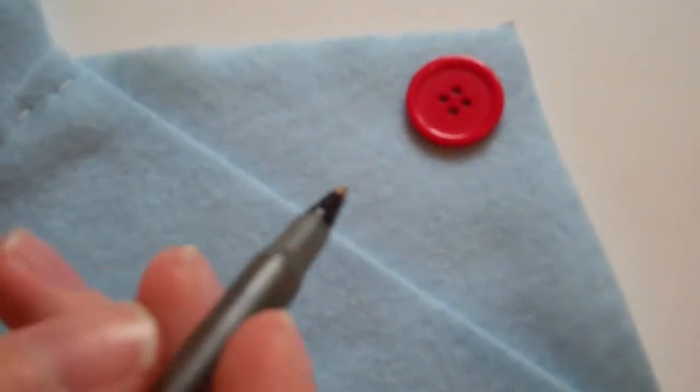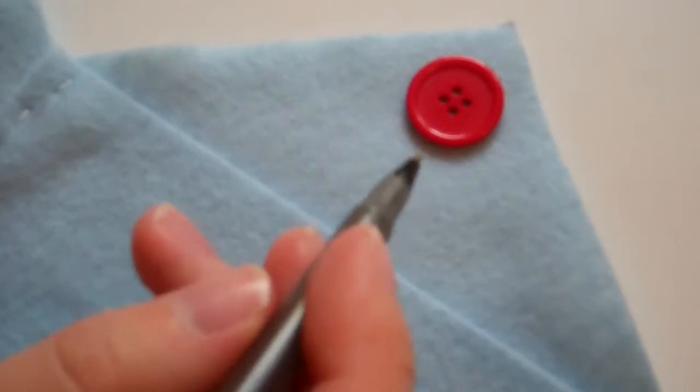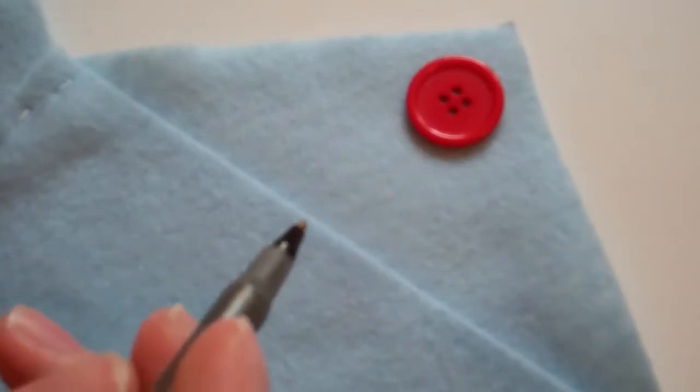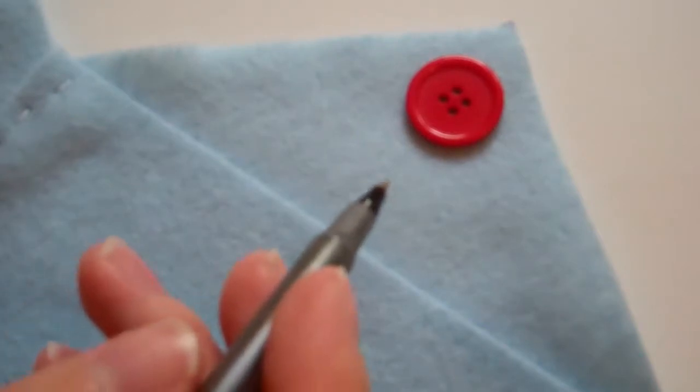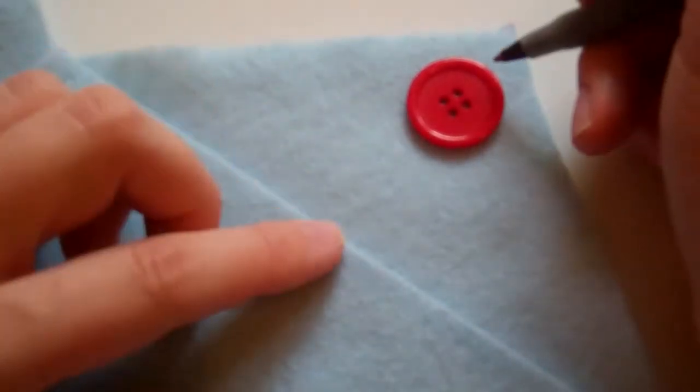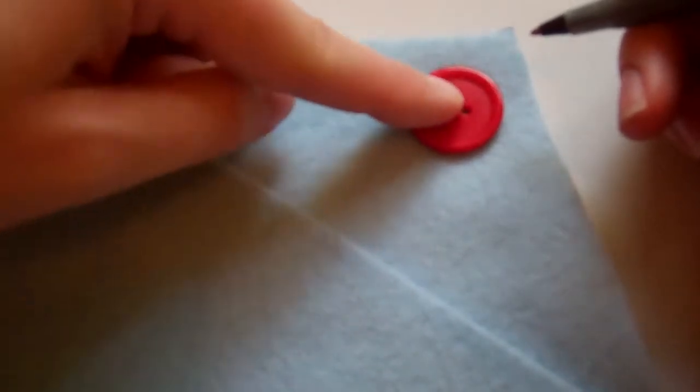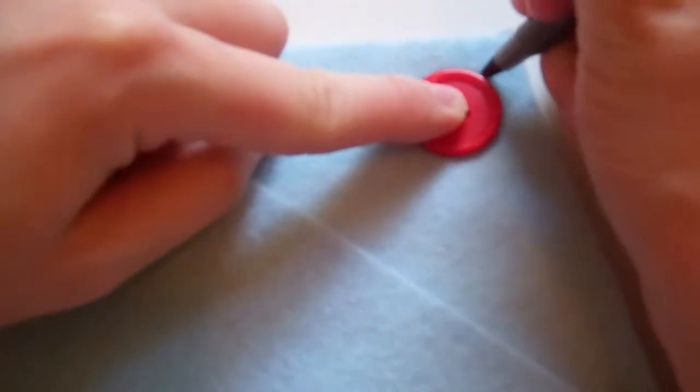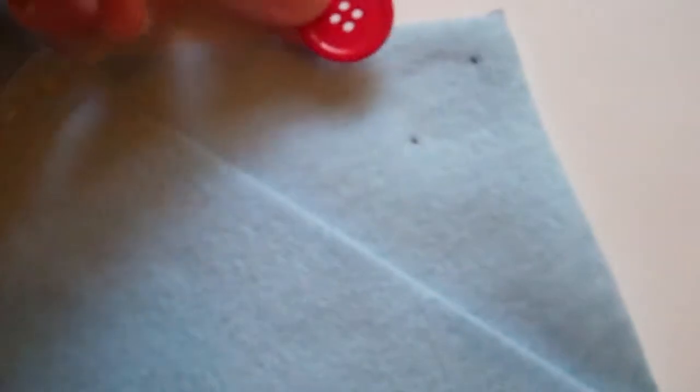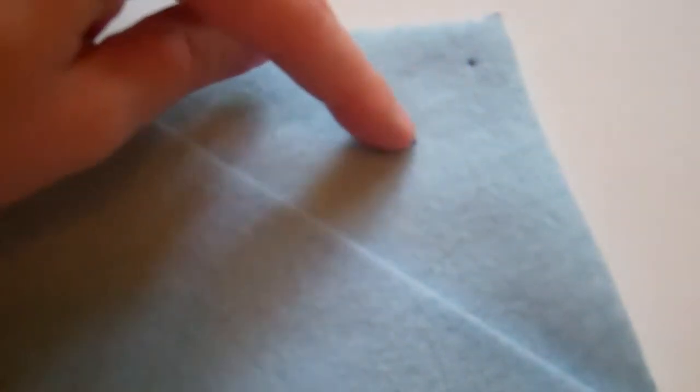The reason that we are using the inside is that we're going to make a little mark, and just in case it shows in the final product, we want it to be on the underside and not on the outside. Please take your ballpoint pen and just hold the button where you want it, and you're going to put a tiny mark at the top and the bottom of the button, so that when you take away the button, you can see where it should go.